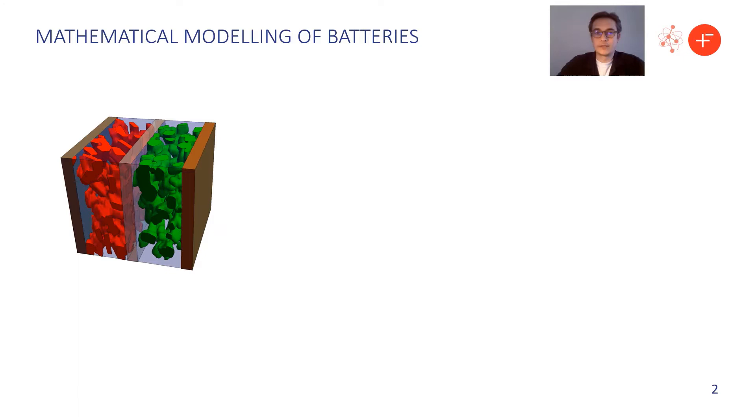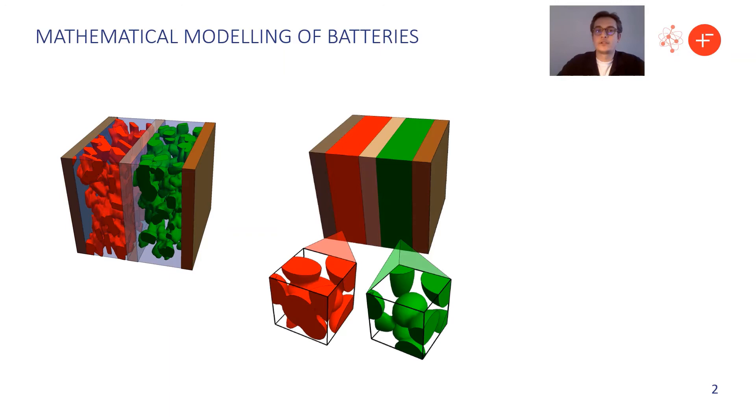Now typically when we're modeling batteries we take this complicated microstructure and do some kind of homogenization or volume averaging procedure to end up with something that looks like this illustration in the middle. So now we have a three-dimensional model on the macro scale, the scale of the pouch, in which the electrodes are treated as homogenized media. And there's a micro scale problem which contains information about the microstructure.